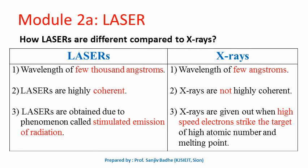How are lasers different compared to X-rays? Lasers are electromagnetic waves having a wavelength of a few thousand angstroms — they are light waves. For visible light, the wavelength is in the range of 3000 to 7000 angstroms. X-rays are also electromagnetic waves but their wavelength is only a few angstroms, 1 to 10 angstroms. In lasers the light waves are highly coherent, whereas X-rays are not coherent. Lasers are obtained due to stimulated emission of radiation, whereas X-rays are obtained when high-speed electrons strike a target with high atomic number and high melting point. Currently some research is going on for the development of X-ray lasers also.